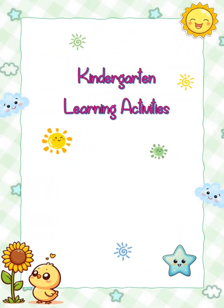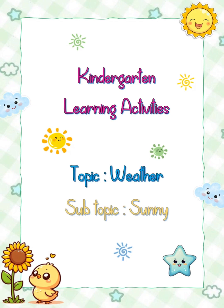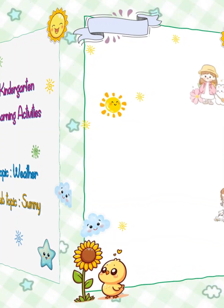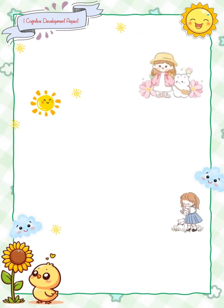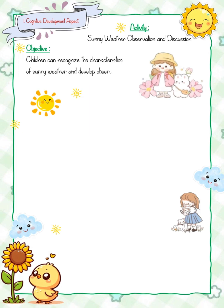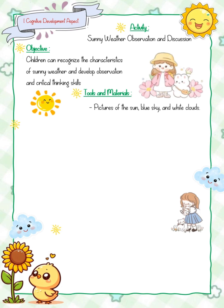Kindergarten learning activities — topic: weather, subtopic: sunny. Activity one, cognitive development aspect: sunny weather observation and discussion. Objective: children can recognize the characteristics of sunny weather and develop observation and critical thinking skills. Tools and materials: pictures of the sun, blue sky, and white clouds, whiteboard or poster.